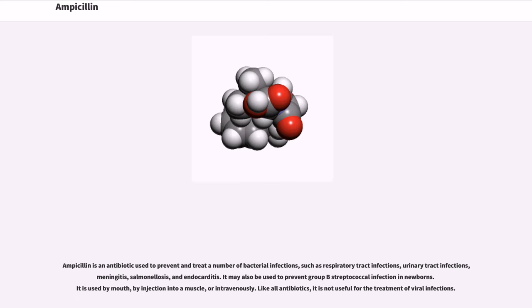Ampicillin is an antibiotic used to prevent and treat a number of bacterial infections, such as respiratory tract infections, urinary tract infections, meningitis, salmonellosis, and endocarditis.